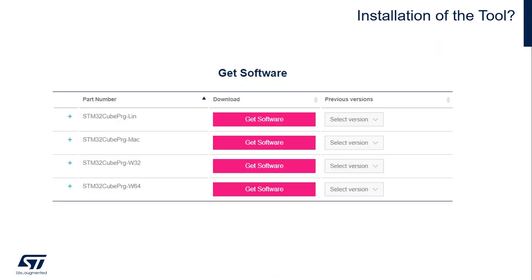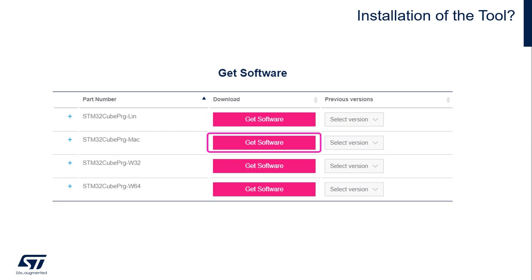This will bring you to these choices, where you're going to select which installer you want to download depending on which operating system you are running on. The first link will be the Linux installer. The second one will be the Mac installer.